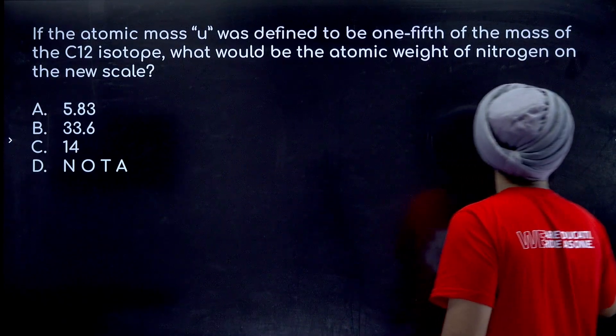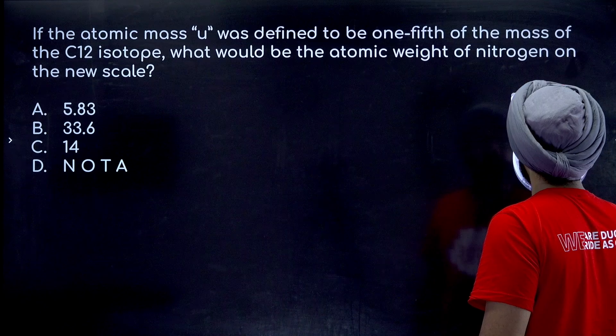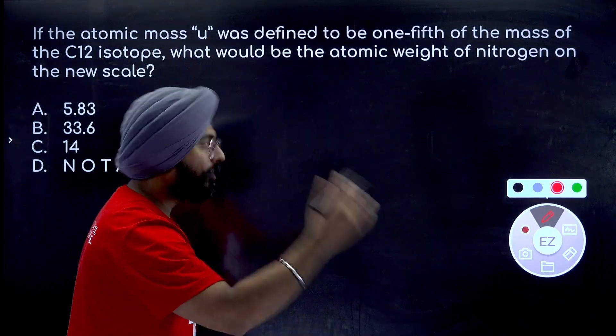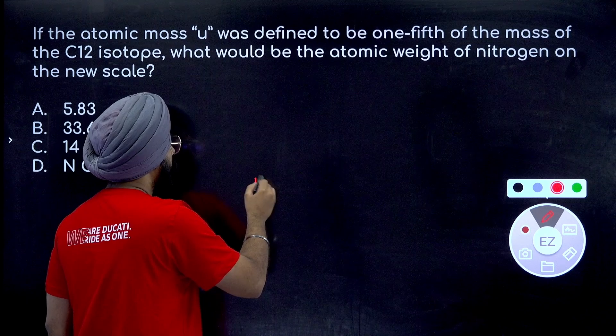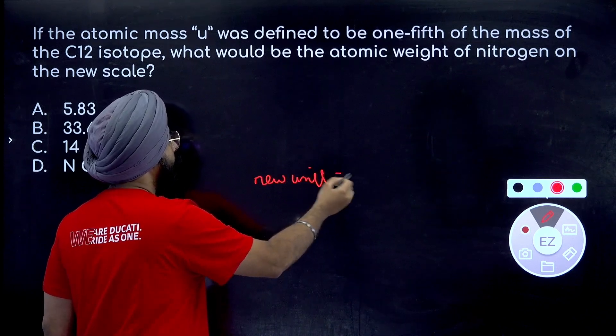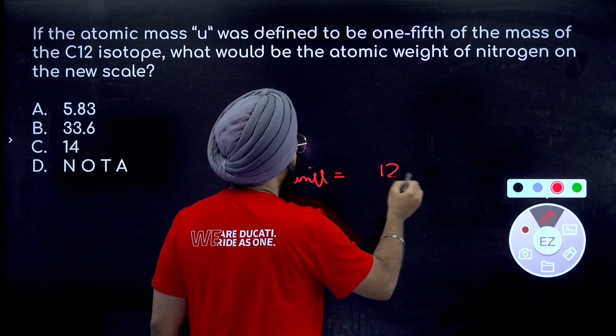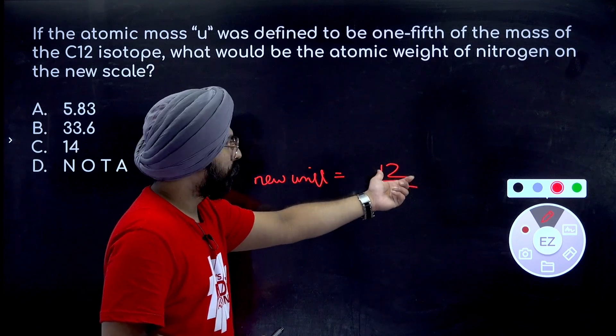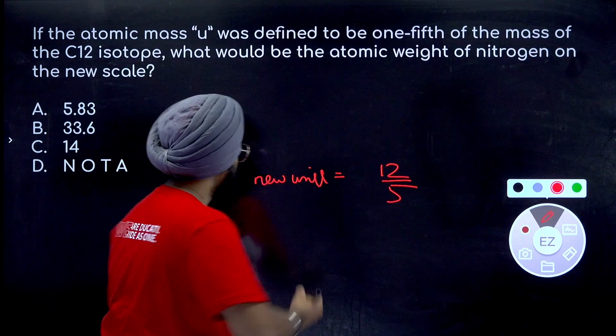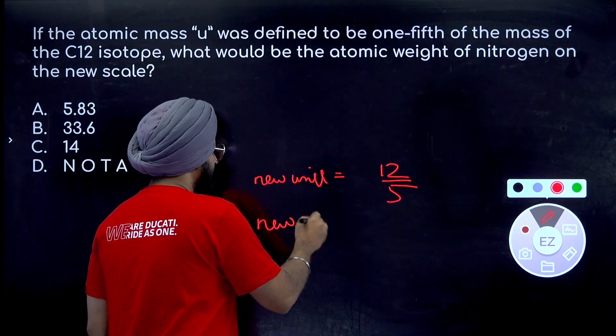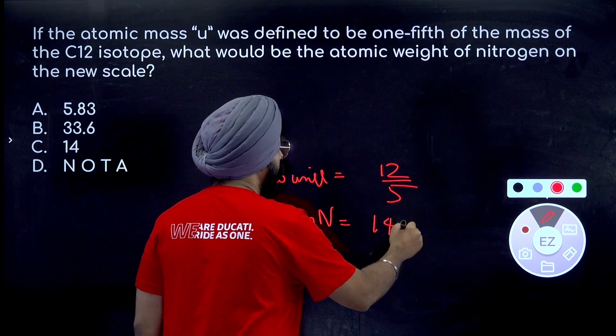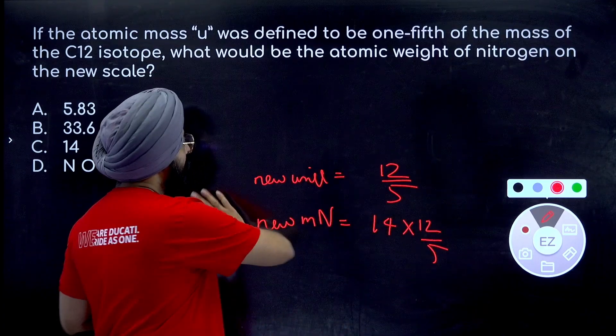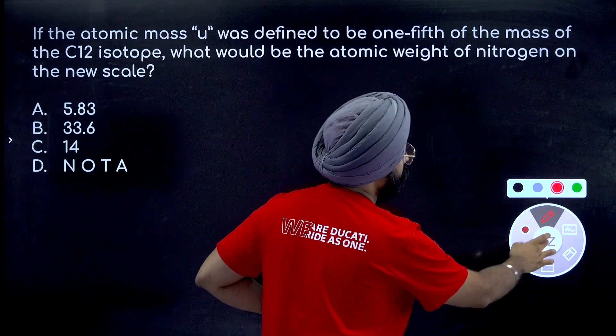See, the mistake, let's just focus on the mistake first which you don't have to commit, is that people just try to run through the question without thinking any logic. So they're like okay, new unit is equal to carbon 12 by 5, 12 atomic mass units by 5, old was 12, new is divided by 5, so then new mass of nitrogen will be equal to 14 into 12 by 5. This is the most common mistake that students do, this is not the correct way to solve this particular question.